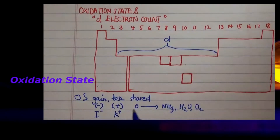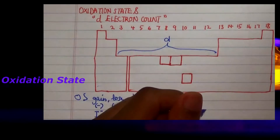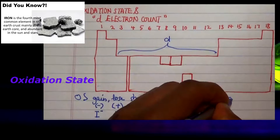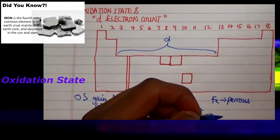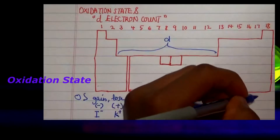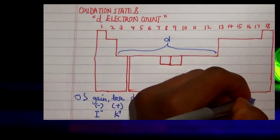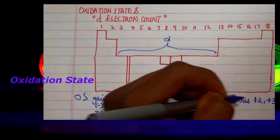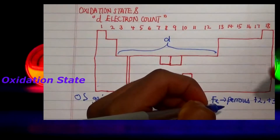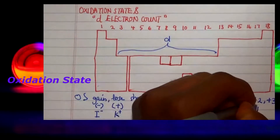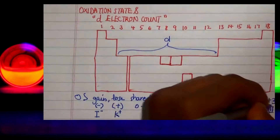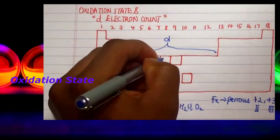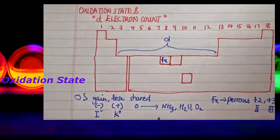Looking at transition metals, they are known to actually access multiple oxidation states. For example, we have iron — also called ferrous in naming. There are two types: those that lose electrons to form +2 and those that lose electrons to form +3. In terms of naming, we recognize those numbers using Roman numerals as II and III. Iron is located in this particular section of our periodic table.